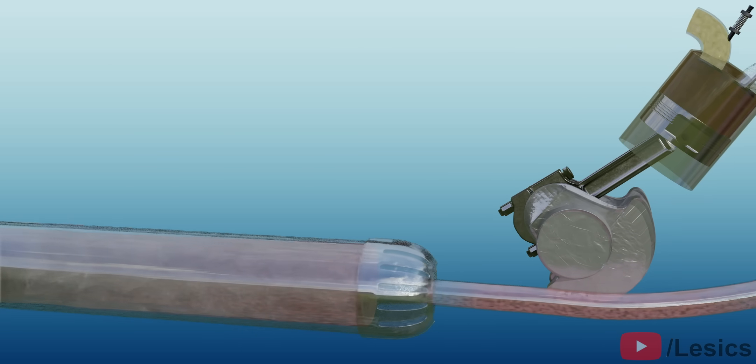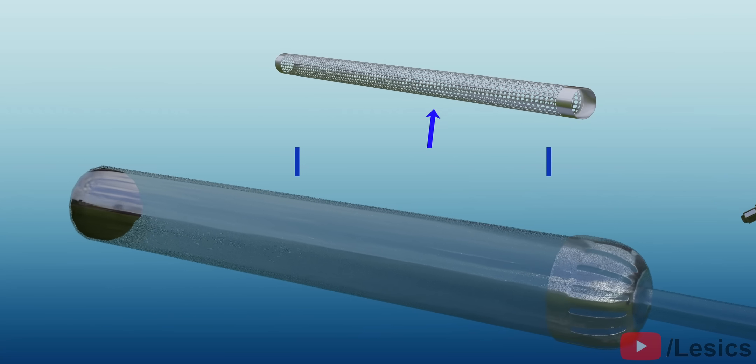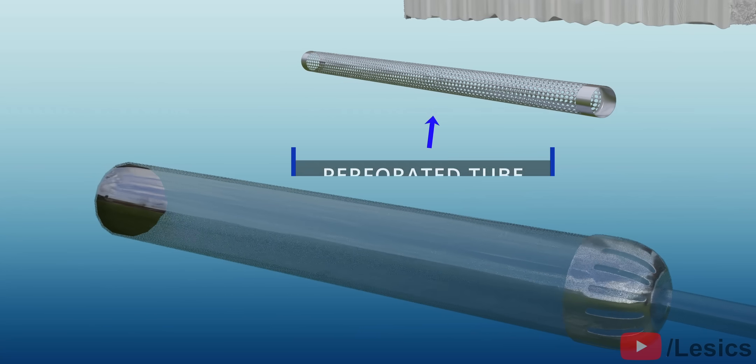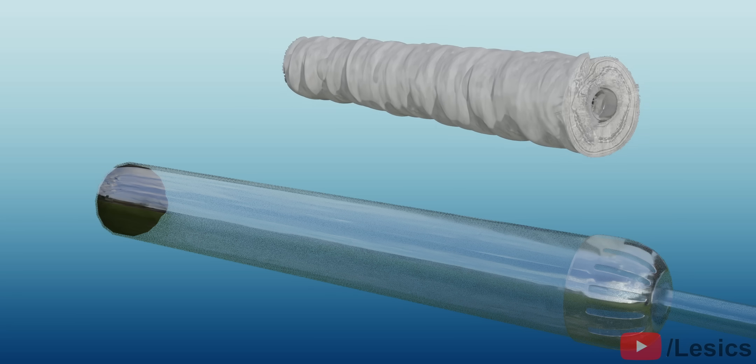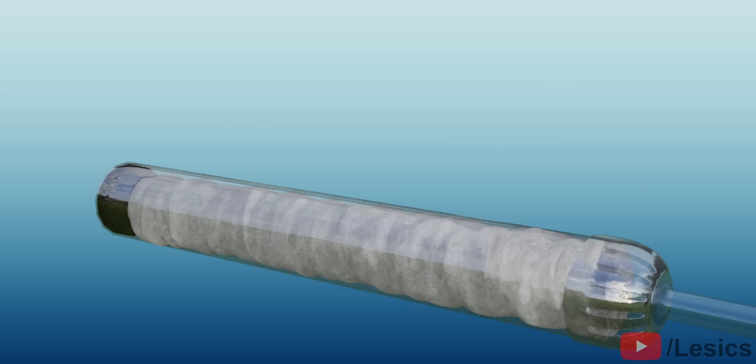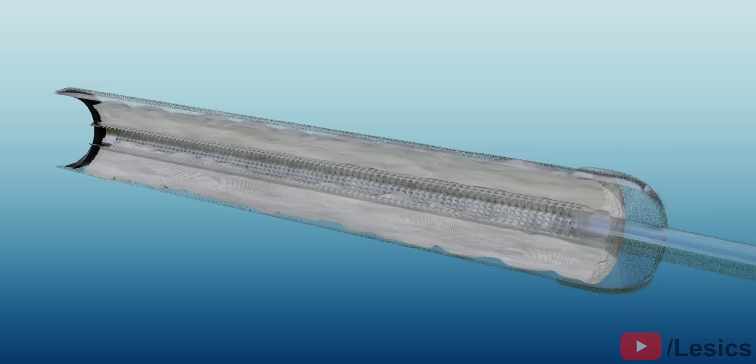Thus, to avoid this, the fiberglass sheet is wrapped around a perforated tube. You might be thinking, with this design, how will the sound waves get absorbed? Will the sound wave escape through the central hole? Here is the trick.